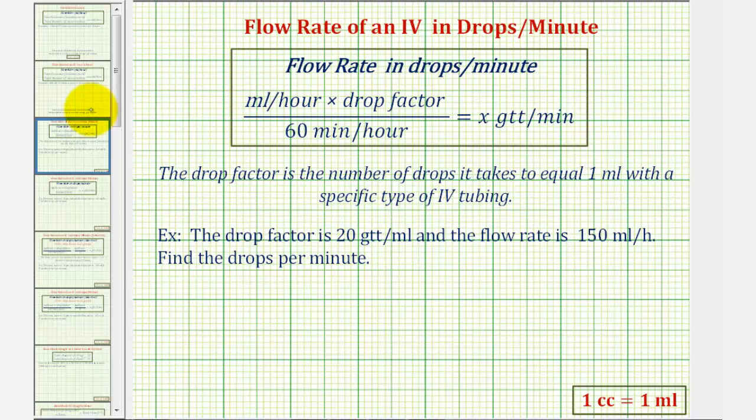Welcome to two examples of determining the drops per minute of an IV. To determine the drops per minute, we're going to multiply the flow rate in milliliters per hour by the drop factor, and then divide by 60 minutes per hour. This will give us the drops per minute.